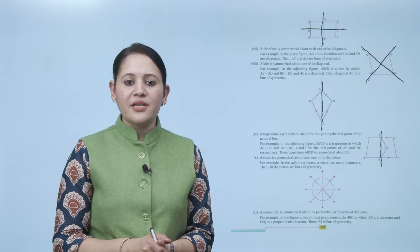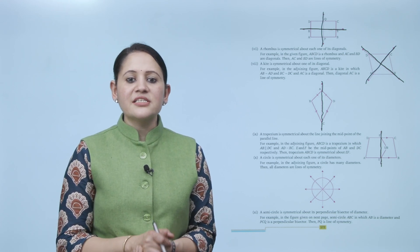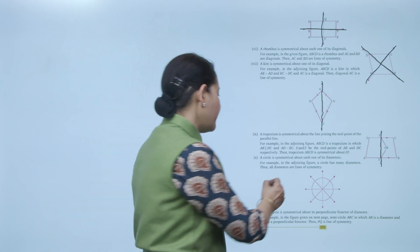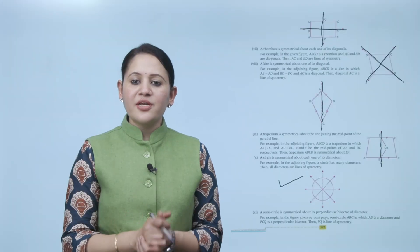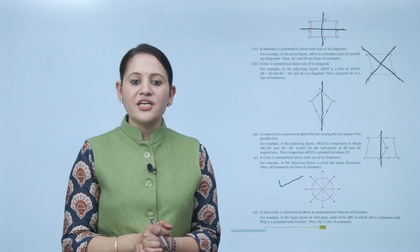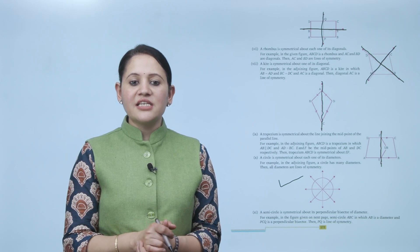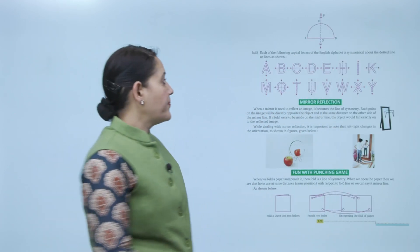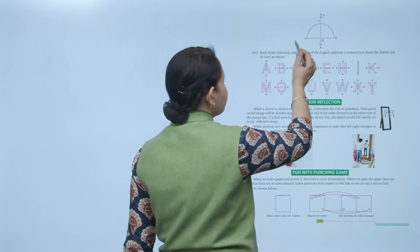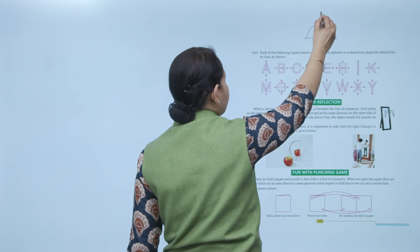A circle is symmetrical about each one of its diameters. In the adjoining figure, a circle has many diameters, and all diameters are lines of symmetry, so a circle has infinite lines of symmetry. A semicircle is symmetrical about the perpendicular bisector of its diameter. In the given figure, semicircle ABC has diameter AB and POQ as the perpendicular bisector, so PQ is the line of symmetry for the semicircle.